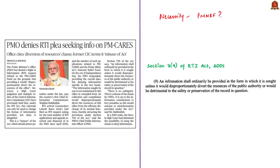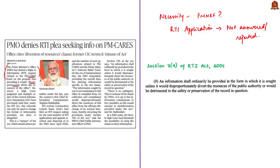One such issue is discussed in this news article: the Prime Minister's office denied a Right to Information request related to PM CARES Fund on the grounds that providing details about this fund would disproportionately divert the resources of the office. Under the RTI Act, an RTI application can be rejected if it disproportionately diverts the resources of the office from the efficient discharge of its normal functions. By using this provision, the Prime Minister's office rejected the RTI application filed with respect to PM CARES Fund. Try to know about PM CARES Fund from a prelims perspective.